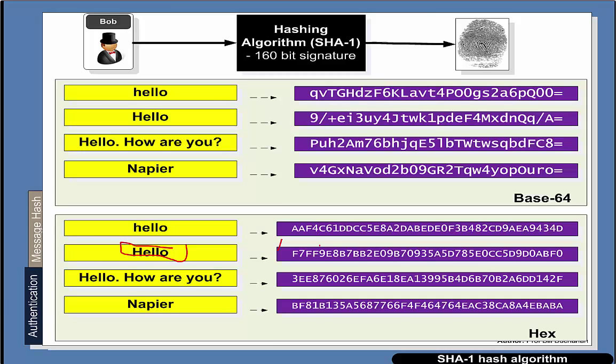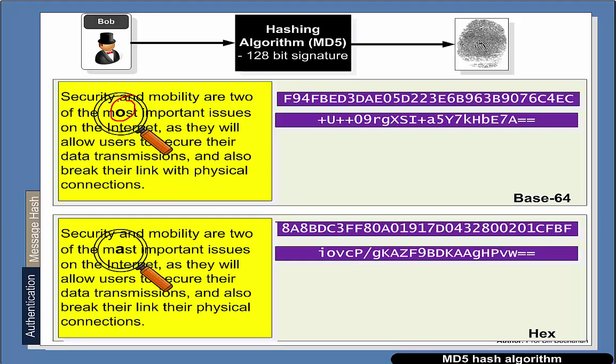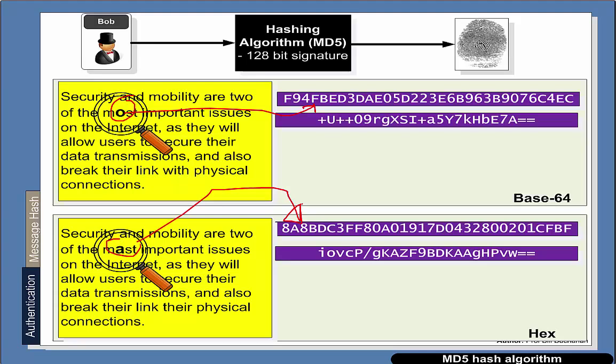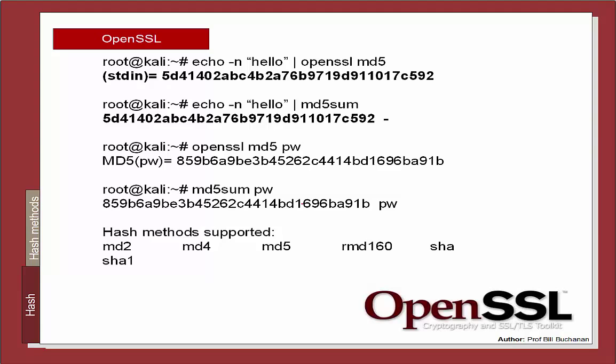The way it works is that we just have to change one little bit of the data — say from an 'o' to an 'a' — and it will completely change the hash signature that we get for the data. We can use packages such as OpenSSL or MD5SUM to look at our hash signatures.